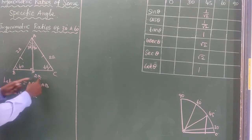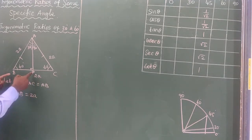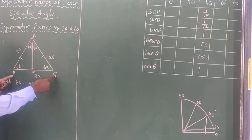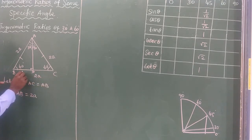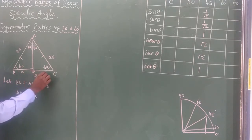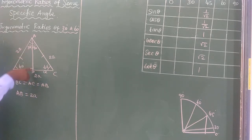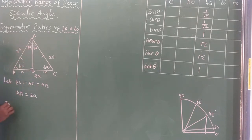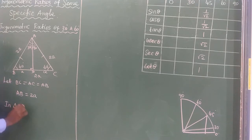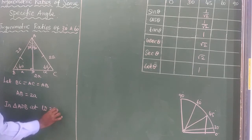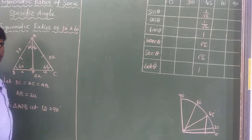The total length BC is equal to 2A, and D is the midpoint of BC, so BD equals A. Now I want to find out the length of AD. In right-angled triangle ADB, the angle at D is equal to 90 degrees.